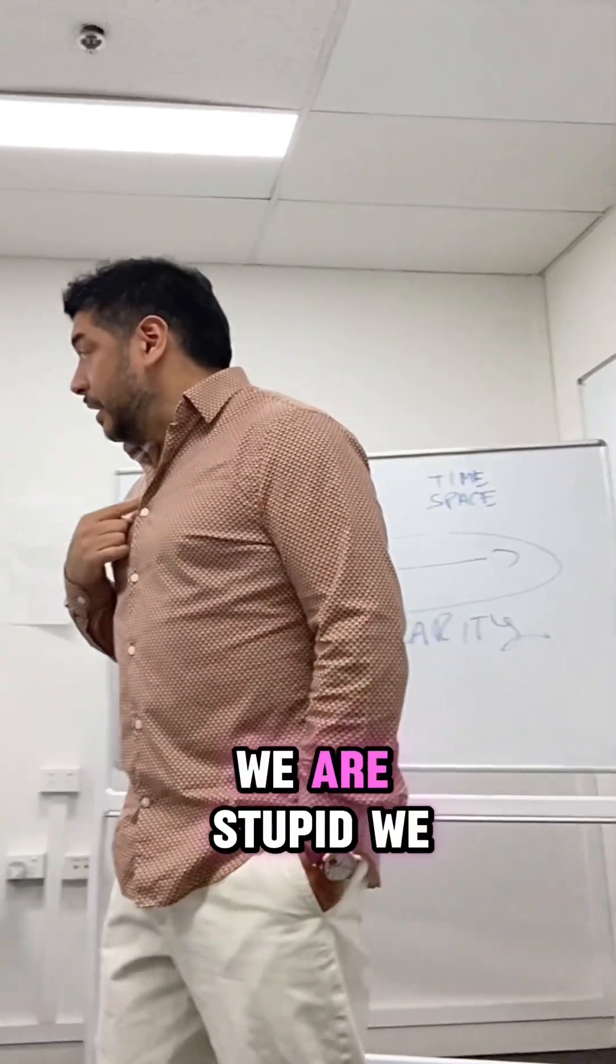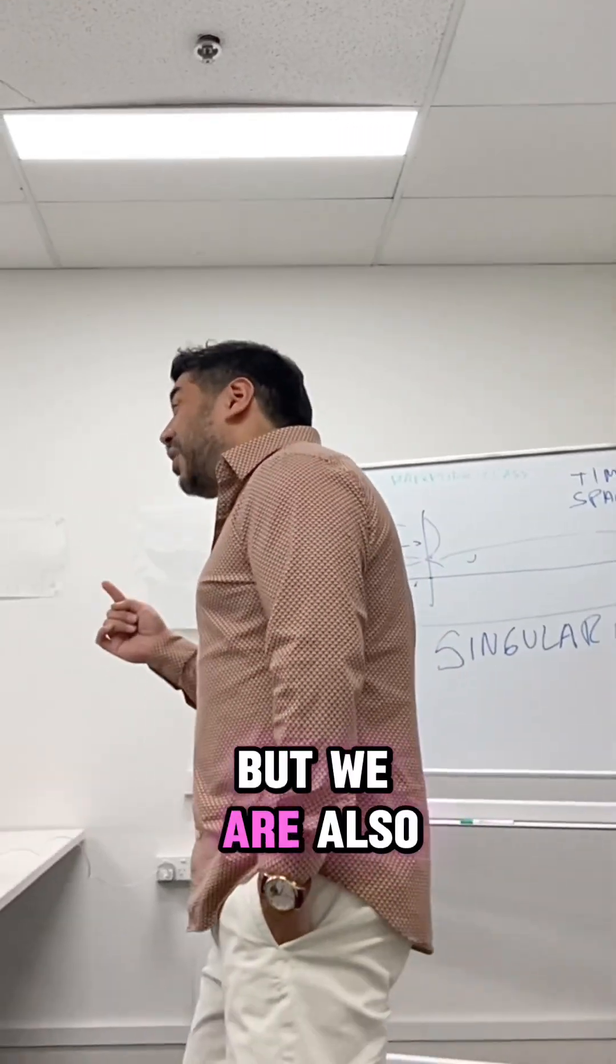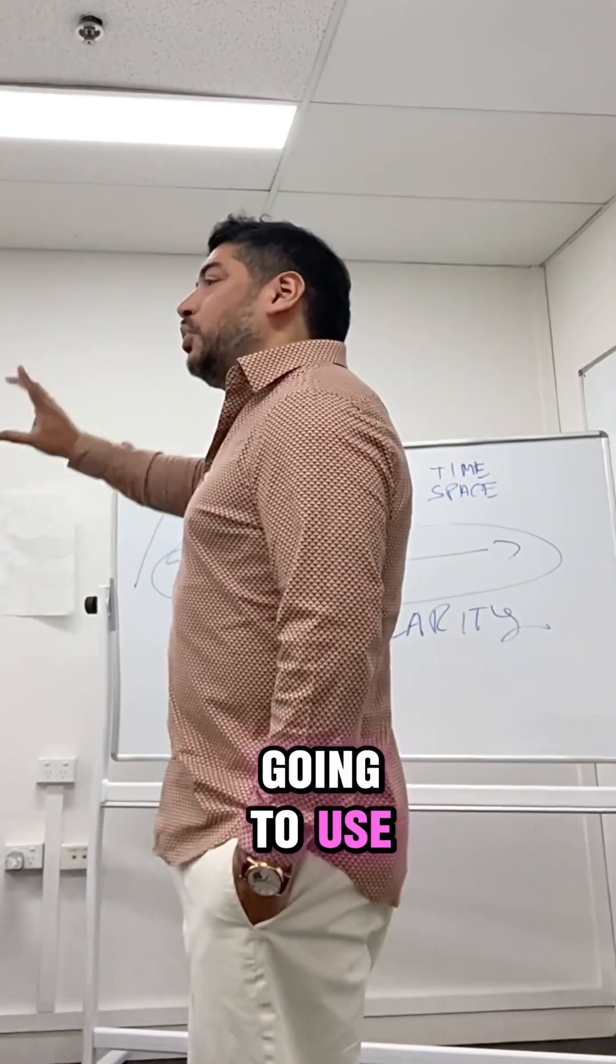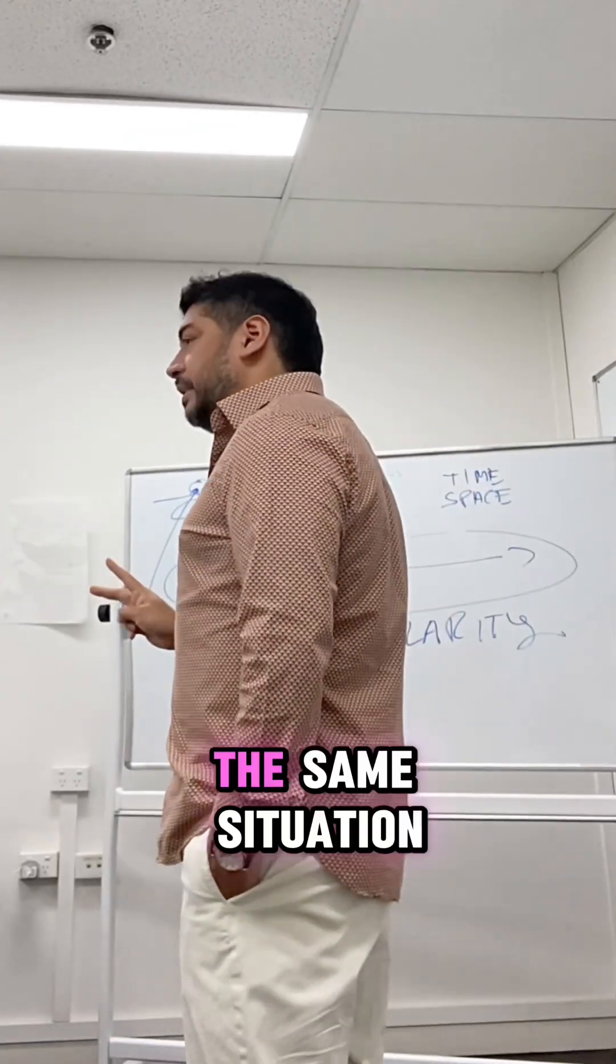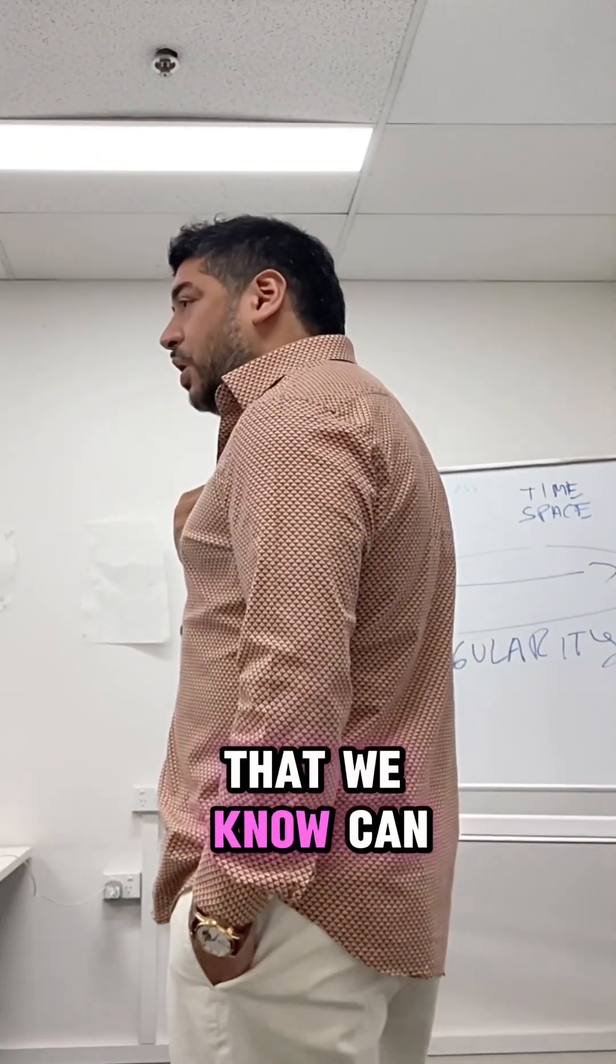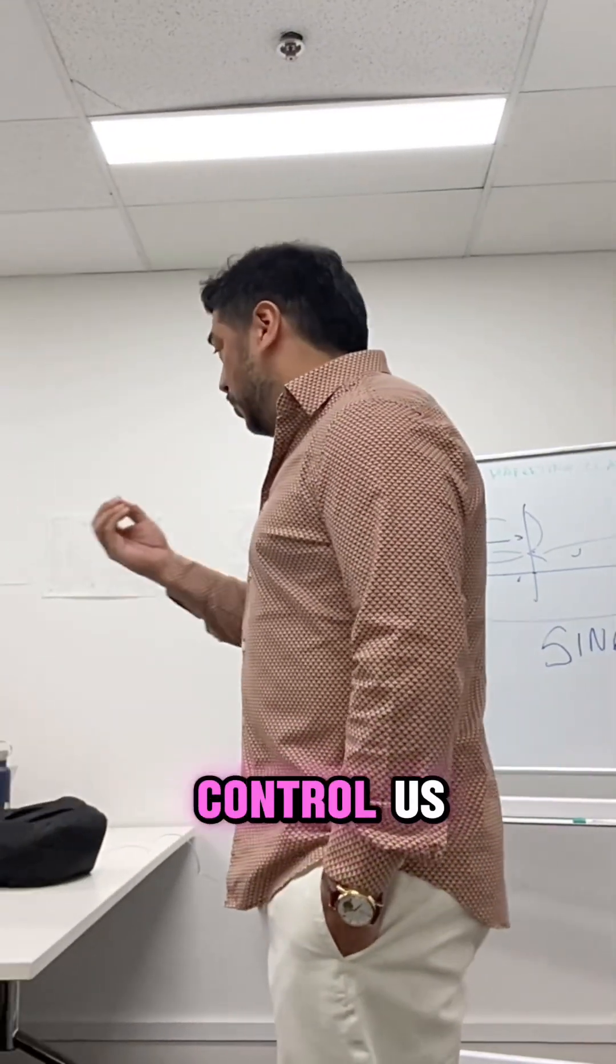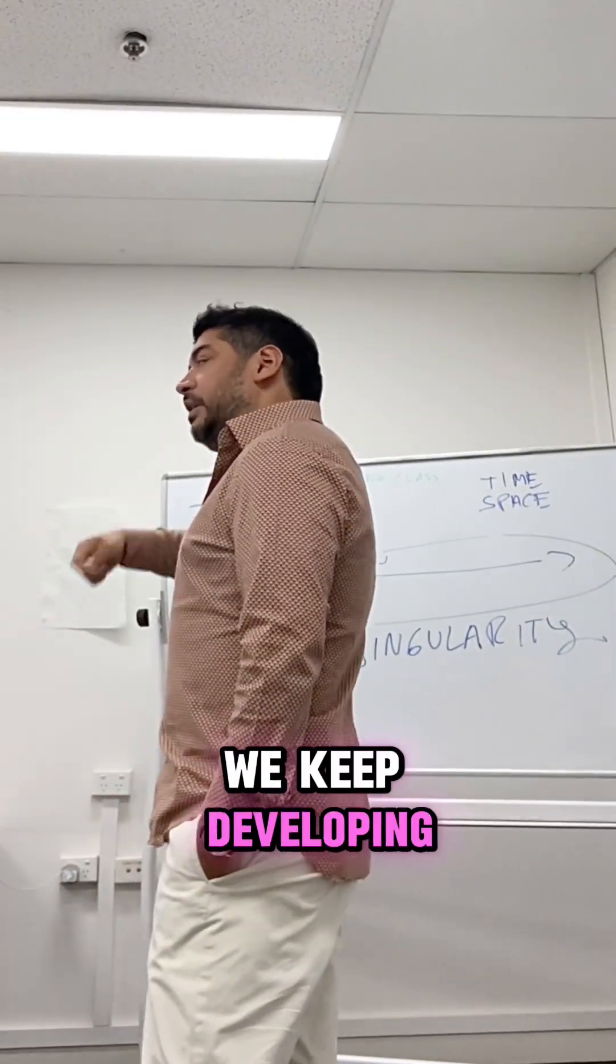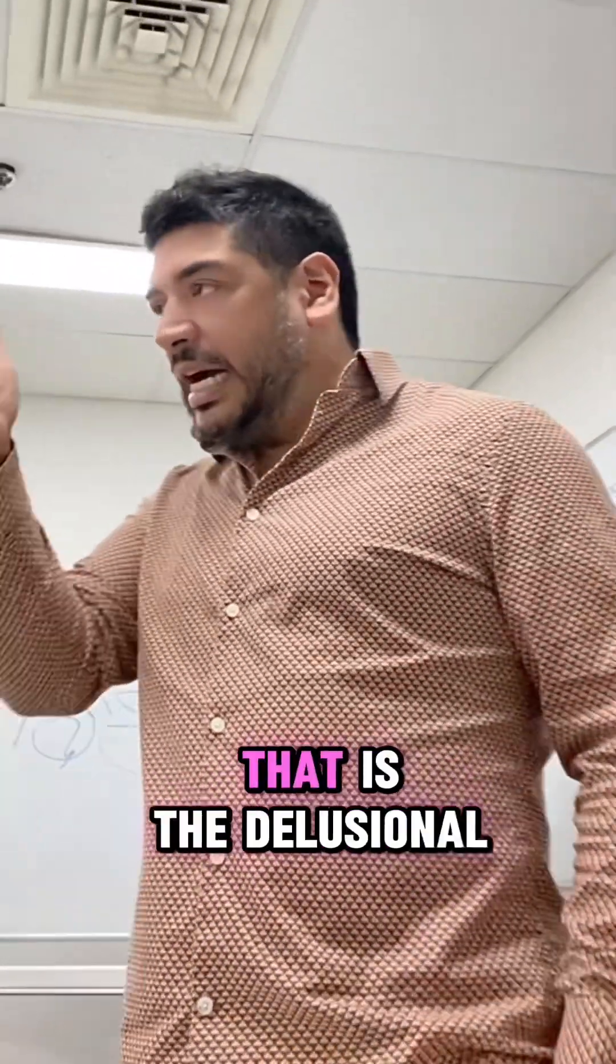So we are stupid - we build things that can kill us. But we are also delusional. We want to believe that we are not going to use those arms in the wrong way. With AI, the same situation. We are building something that we know can control us. Understanding they can control us, some of us still keep researching about it, we keep developing software, we keep developing products, understanding that even at some point they can control us. That is the delusional part.